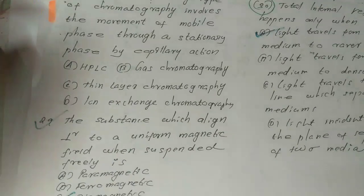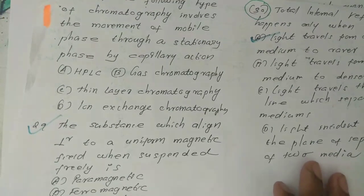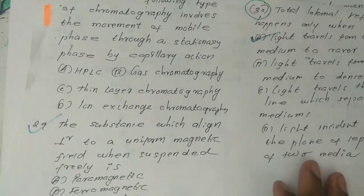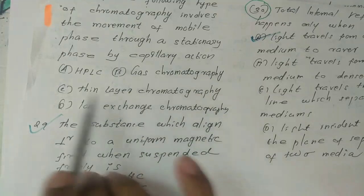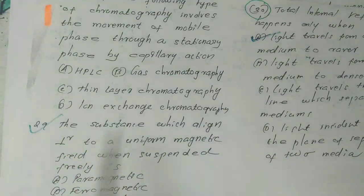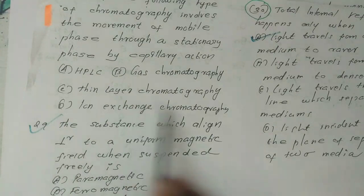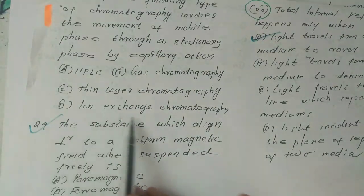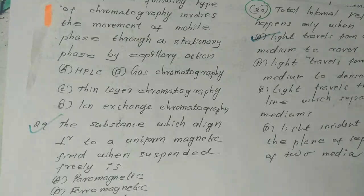MCQ: Which type of chromatography involves movement of mobile phase through a stationary phase by capillary action? Option A: HPLC, option B: gas chromatography, option C: thin layer chromatography, option D: ion exchange chromatography. Leave your answer in the comment box.